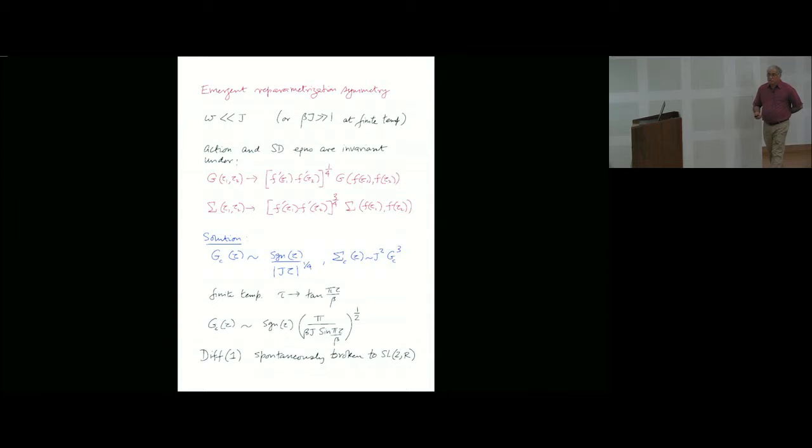Clearly, this symmetry immediately enables you to write down a solution for these bi-locals, which is given by these formulas with a very specific exponent, because you have four fermions and the exponent is one-fourth. The finite temperature can be understood from this by making this type of conformal transformation or reparametrization.